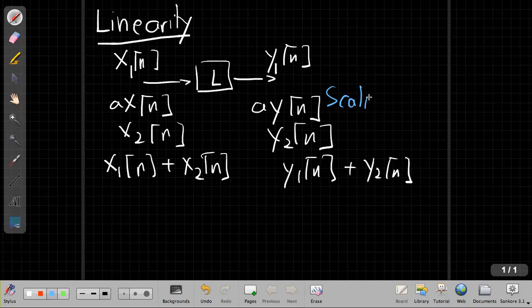This is known as the scaling property and this is known as the additive property for a linear system. So to prove a system is linear, I need both scaling and additivity to hold. We went through a process for doing this in class, but I thought I'd work through one more example.